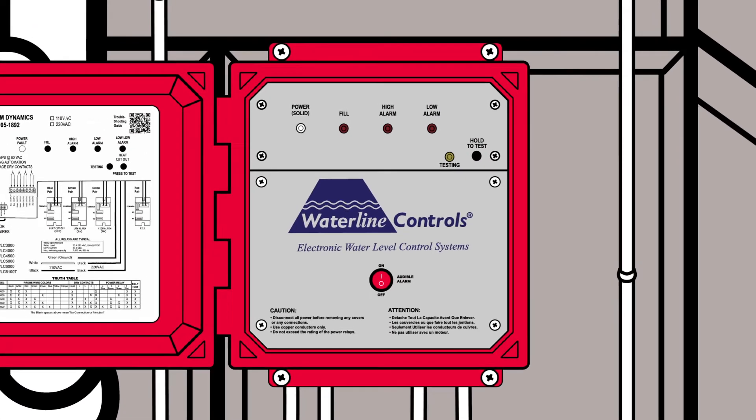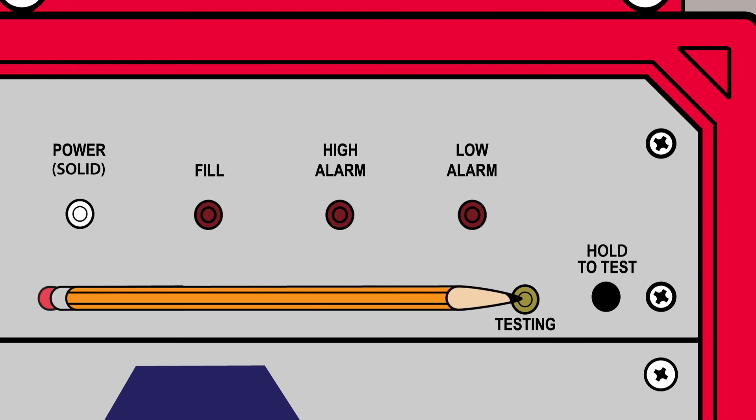To test your waterline control system, press the hold to test button using the tip of a pencil or pen until the yellow testing LED turns on.